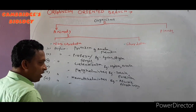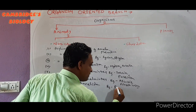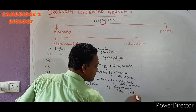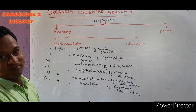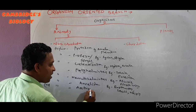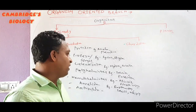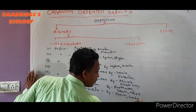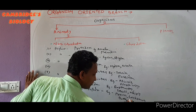The next phylum is Annelida — examples: earthworm, leech, and Nereis. The next phylum is Arthropoda — the largest phylum. Examples include prawn, cockroach, scorpion, and butterflies.